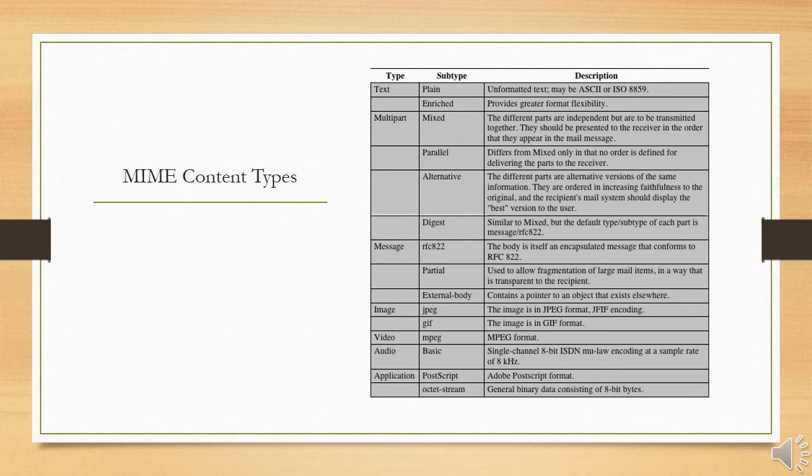The message partial subtype enables the fragmentation of a large message into a number of parts which must be reassembled at the destination. For this subtype, three parameters are specified in the content type message partial field: an ID common to all fragments of the same message, a sequence number unique to each fragment, and the total number of fragments.